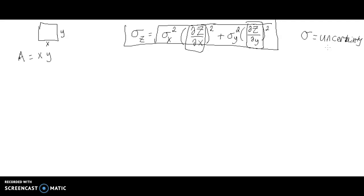So first things first, since sigma represents uncertainty, what that would mean is that this quantity right here, this sigma x, is the uncertainty in my x calculation, or x measurement rather, and sigma y would represent the uncertainty in my y measurement.